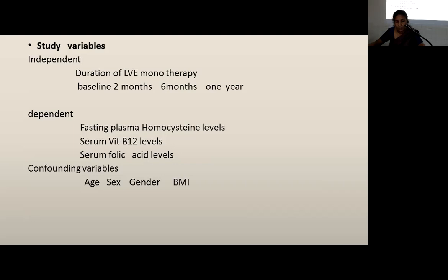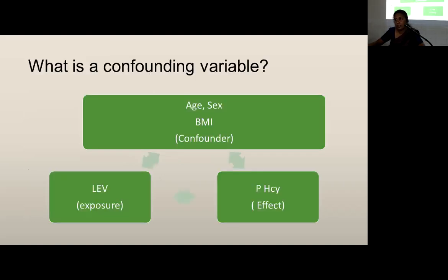I thought to elaborate more on confounding variables. A confounding variable confounds the true relationship between two variables. As an example, although levetiracetam may not cause elevation of homocysteine, an age-related increase of homocysteine may appear as if it was caused by levetiracetam. This is a hypothetical situation — it may or may not be true.